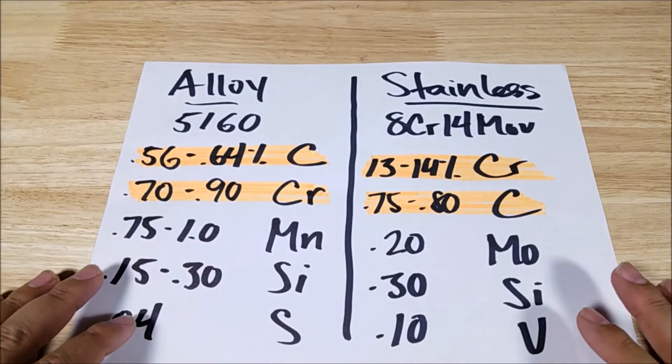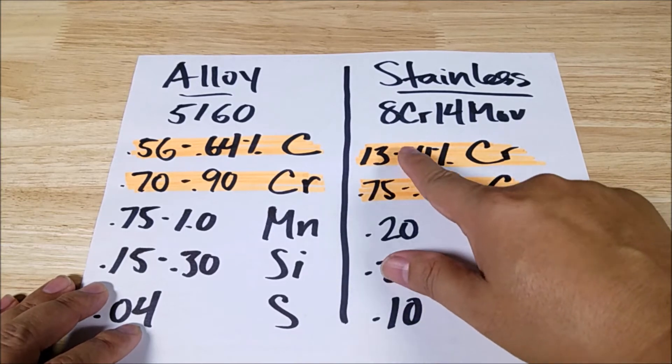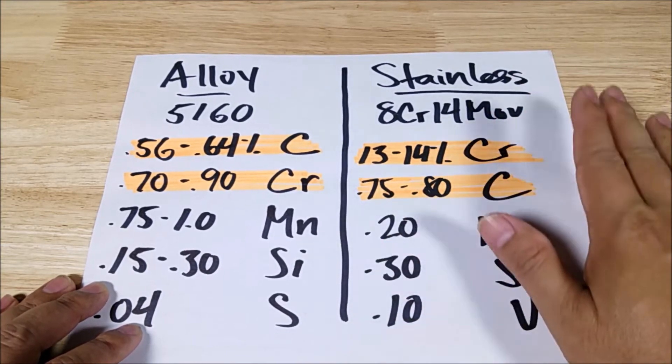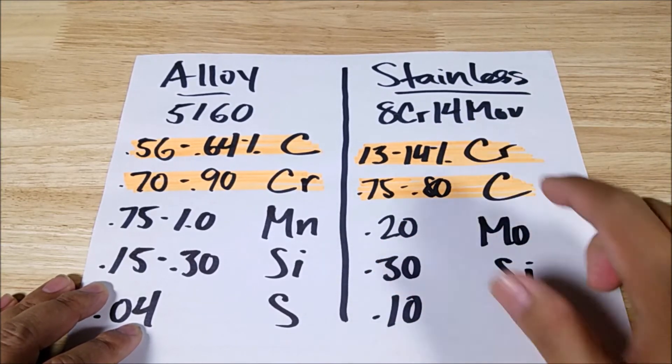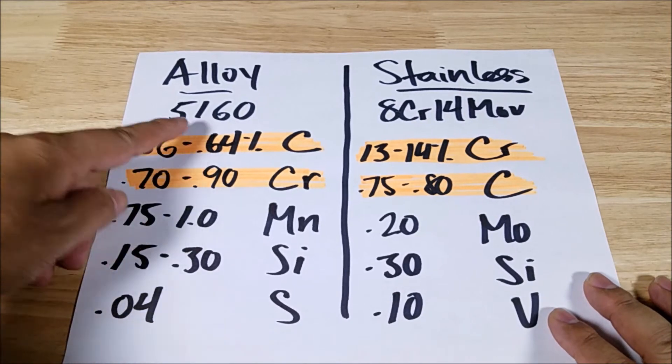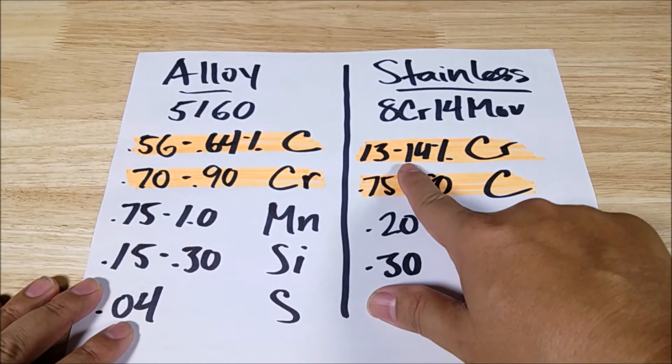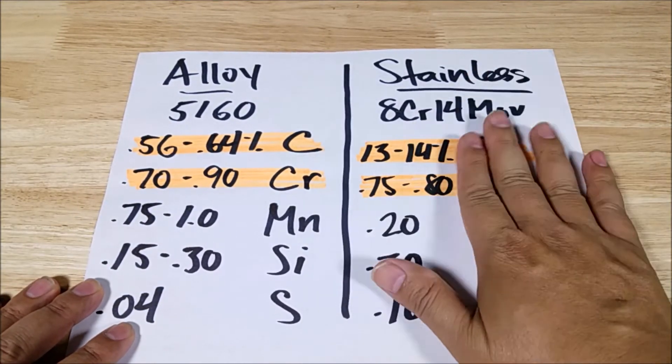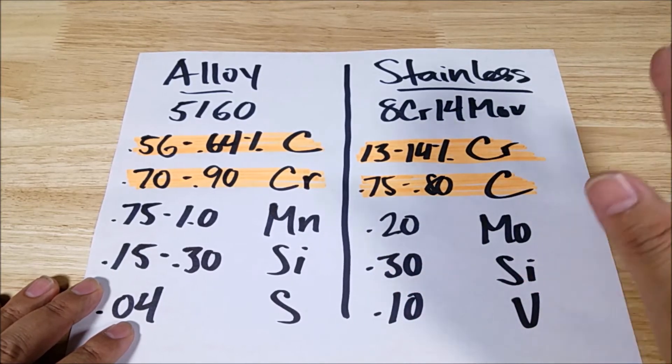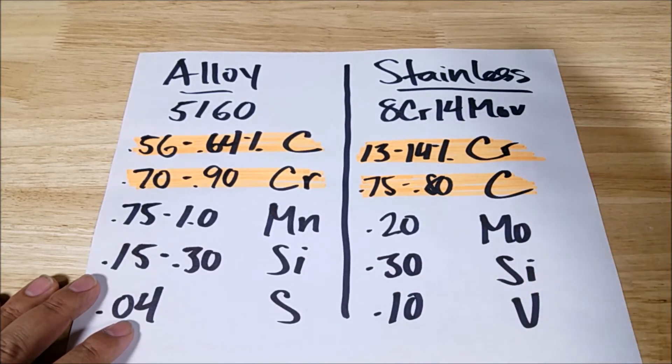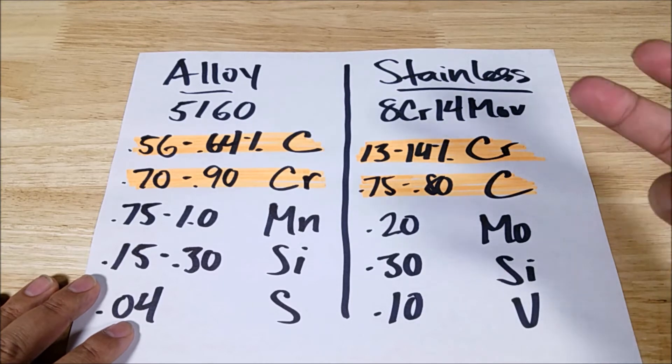Alright, let's have a look at some stainless and some alloy. So we got the 8CR14MOV on this side, which is the newer version. The older one is 13 and we got 5160 on this side. Again, if you look at the chromium, it's 13 to 14% on the stainless. And we all know that stainless is extremely corrosion resistant. So if you live in a place like Hawaii or you're on water a lot, that's something that you want.